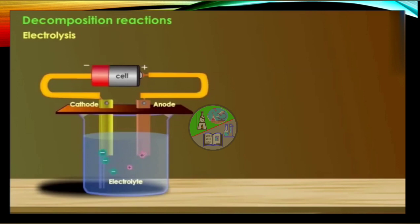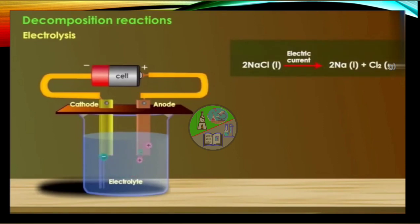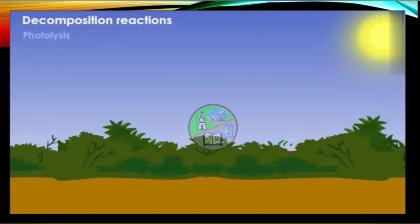The decomposition of a substance by passing electric current through it is known as electrolysis, or electrolytic decomposition. For example, sodium chloride on passing electric current gives sodium and chlorine gas. The decomposition of a compound with light is called photolysis, or photolytic decomposition.